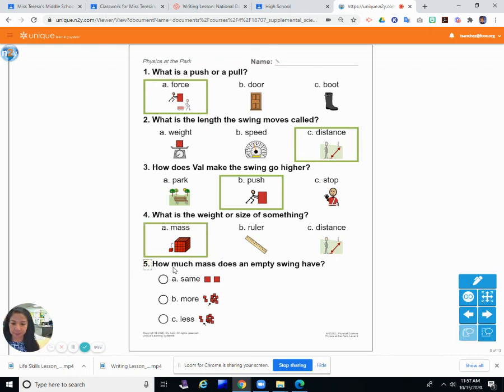And our final question. Five. How much mass does an empty swing have? How much mass does an empty swing have? So without a person on it, is it the same A, more, or less? Yes. You think it's the same? It doesn't change? No. It changes. More? No. An empty swing has less mass. It's less heavy. It's not as big. So that is our physics lesson for today.